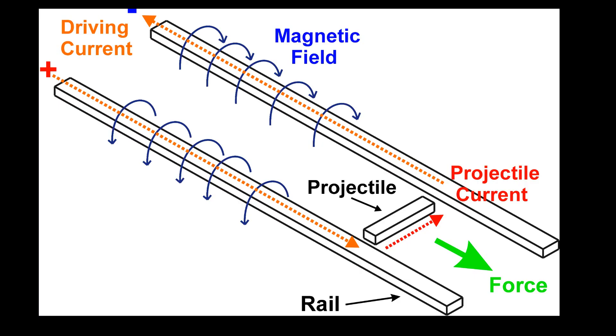So how does it work? First of all, there are two rails connected to a huge power source. The projectile is located between the rails and basically causes a short circuit which causes a high current. All currents create a magnetic field as shown in the picture. According to the Lorentz law, every charge traveling in a magnetic field experiences a force. This force, green in the picture, propels the projectile between the rails.